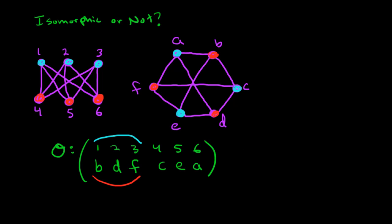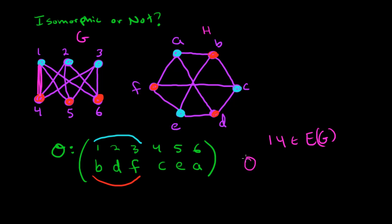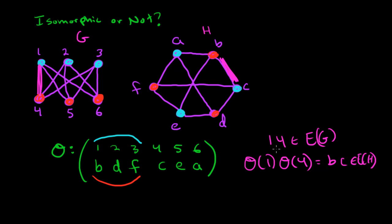Let's take a look at this edge right here — I'll draw it in pink. That's edge 1, 4; it's an edge of our original graph G. Let's see what happens to 1 and 4 after you apply the map: sigma of 1 is B, and sigma of 4 is C. So is BC an edge? Yes, it is — it's right there in the other graph. You can do this same check for every one of the nine edges and show that it is an isomorphism. So G is isomorphic to H.